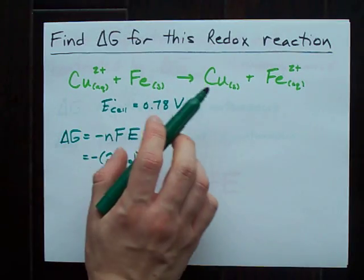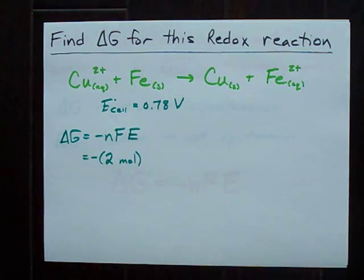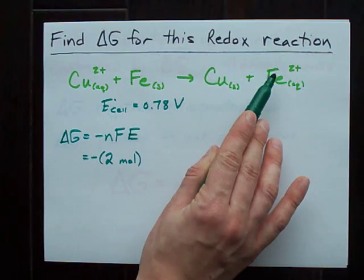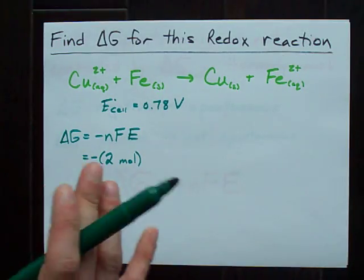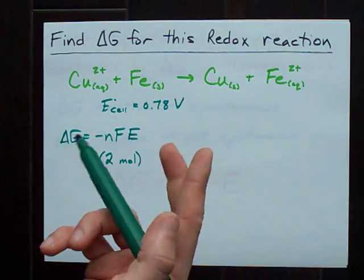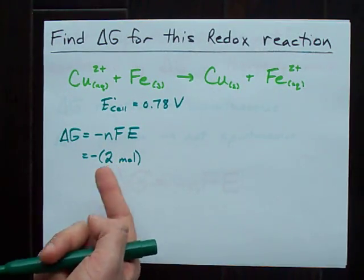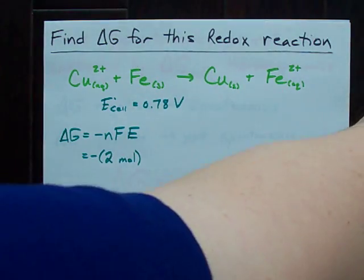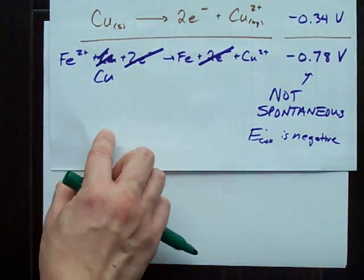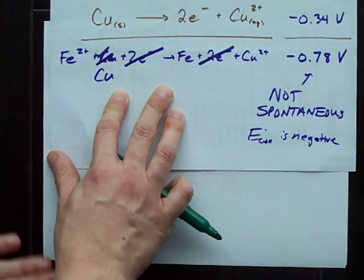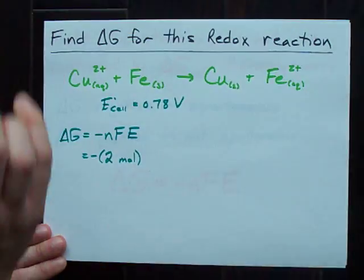The copper gained two electrons. The iron lost two electrons. The lowest common multiple of those two is two. And so, we're swapping two electrons each side. When you have your overall reaction, we cancel out two electrons on each side. That's probably the easier way to think about that.